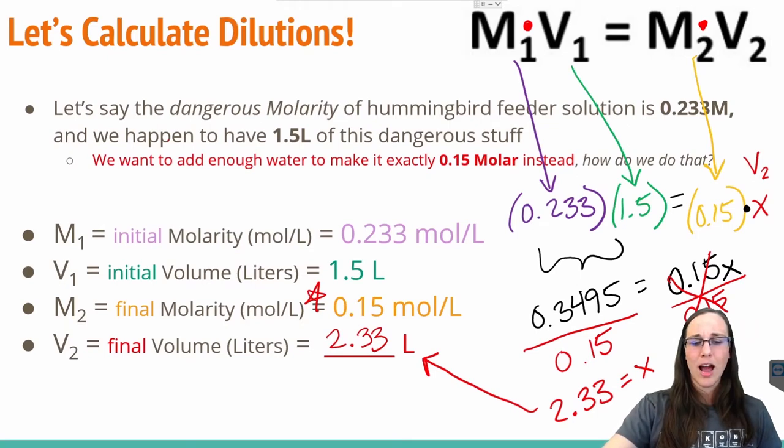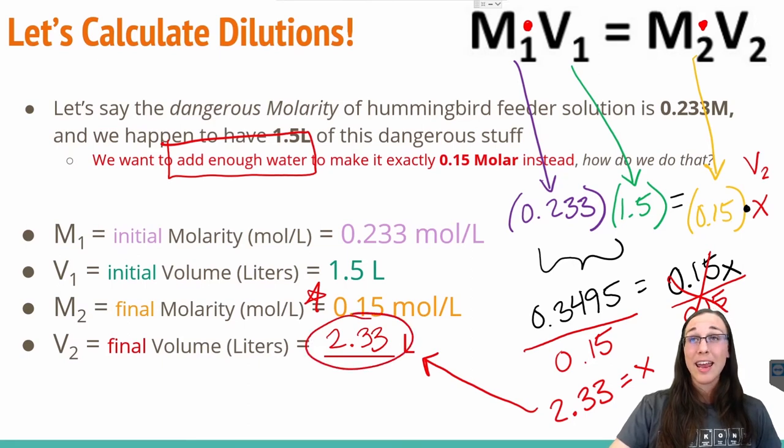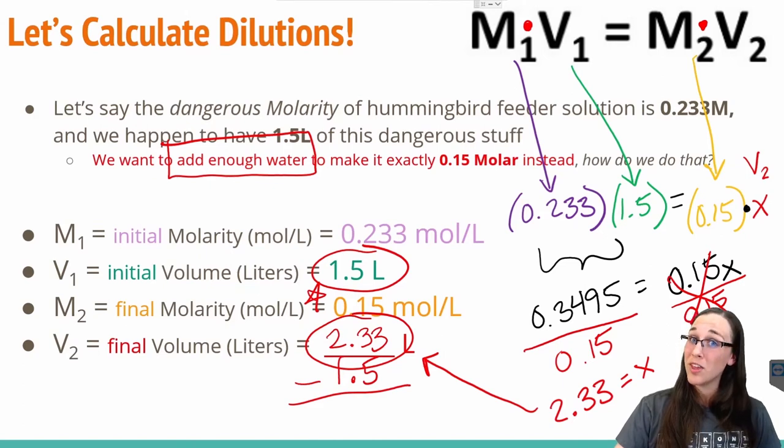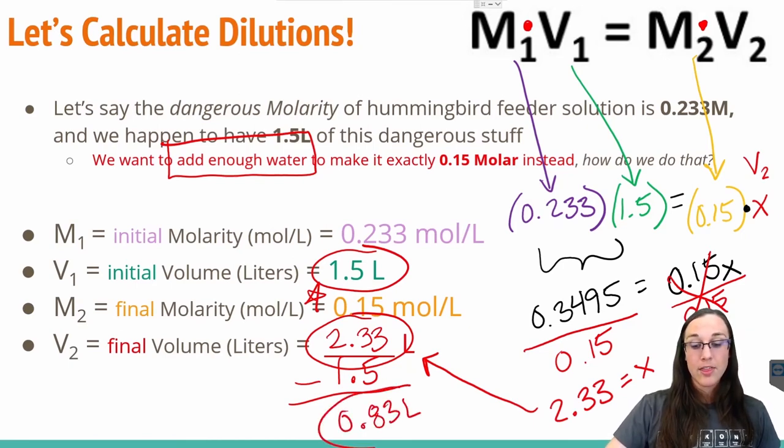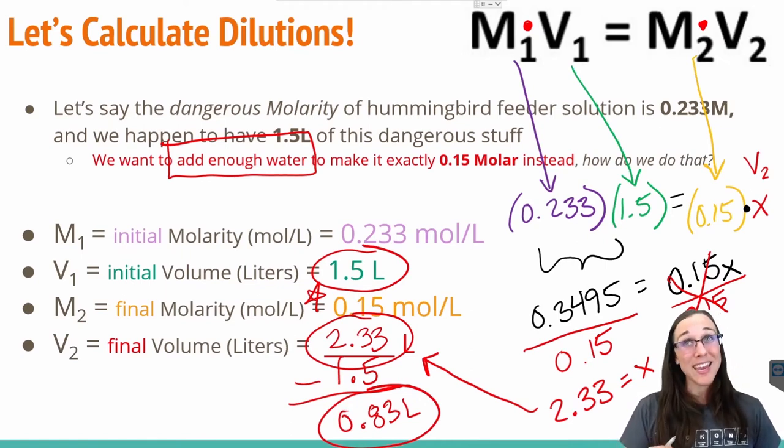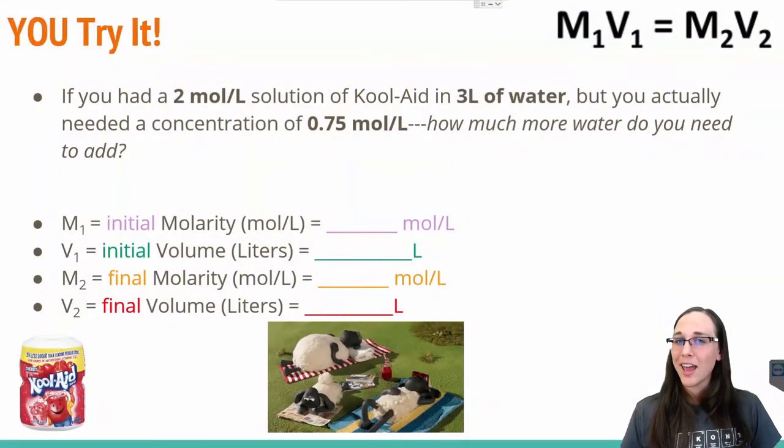In other words, if I need to figure out how much water to add, I need to know how much of this is water and how much of this is original chemical we started with. If you catch where I'm going with this, I need to subtract 1.5 from my 2.33 total volume in order to figure out how much water I need to add. If I subtract those two values, I get 0.83 liters. That's how much water I would need to add to my already existing solution in order to create a new diluted solution of 0.15 molars, so that you can sit out on a hot summer day and watch the hummingbirds fly around and drink your Kool-Aid. Go ahead and give this one a try.